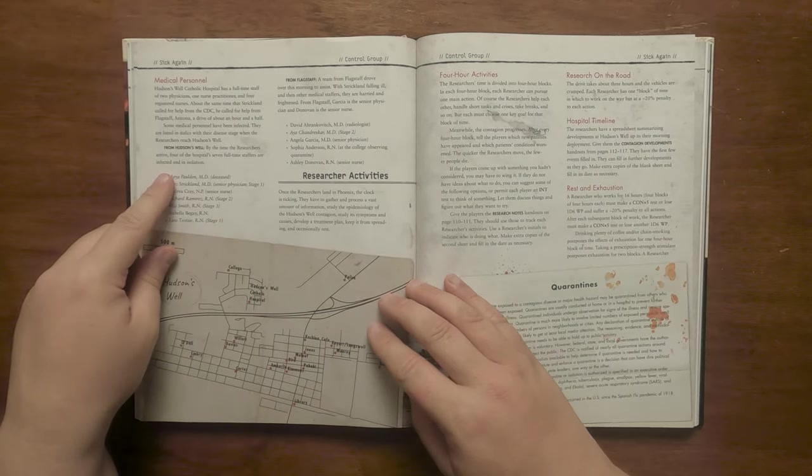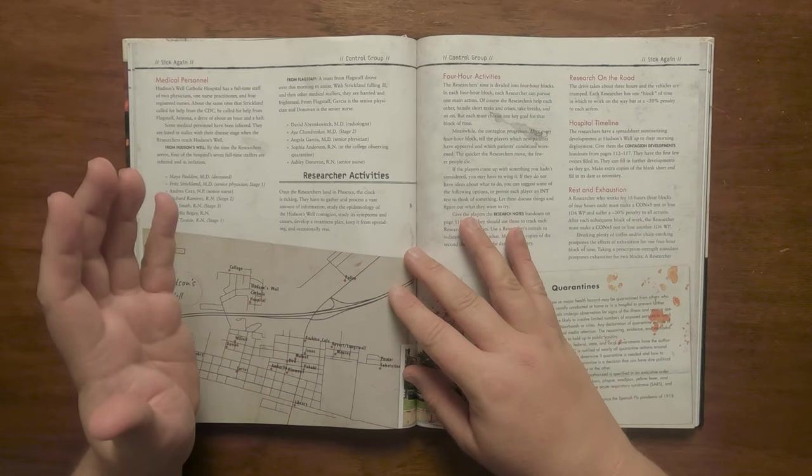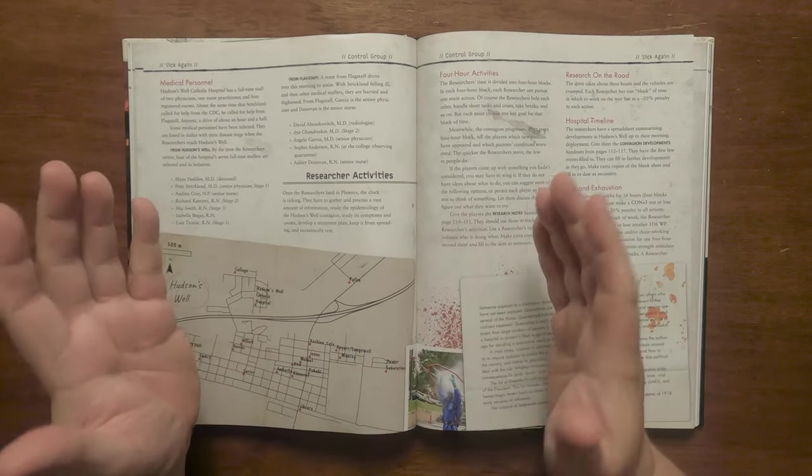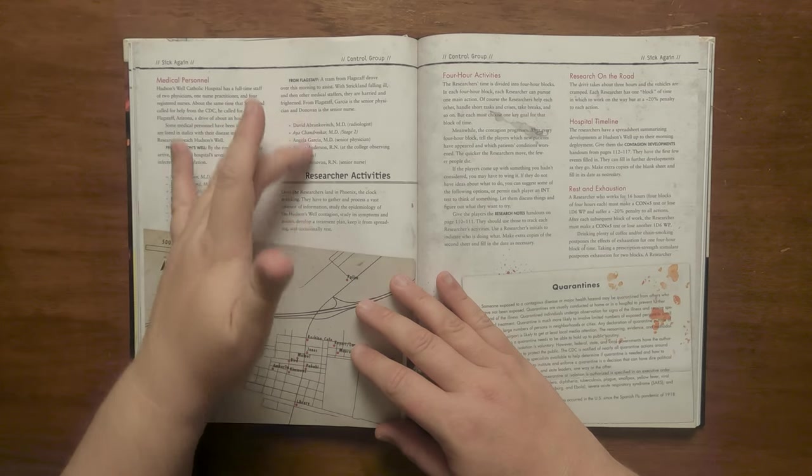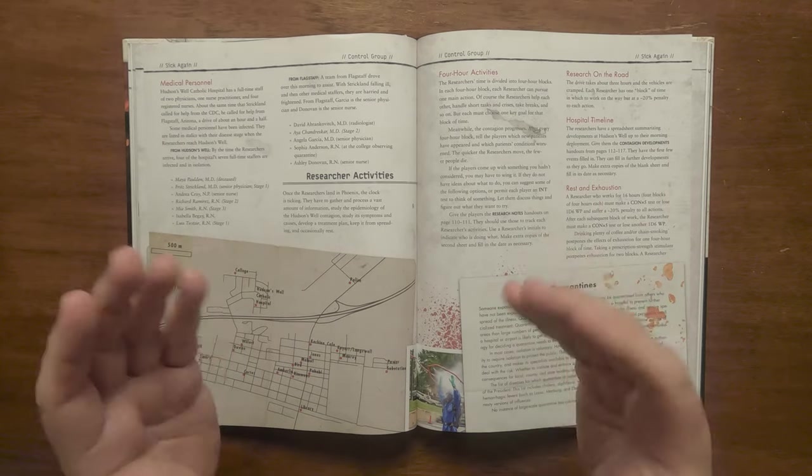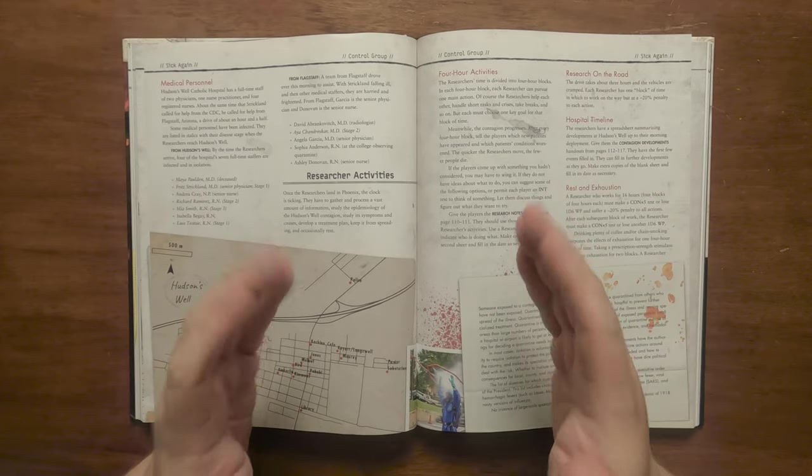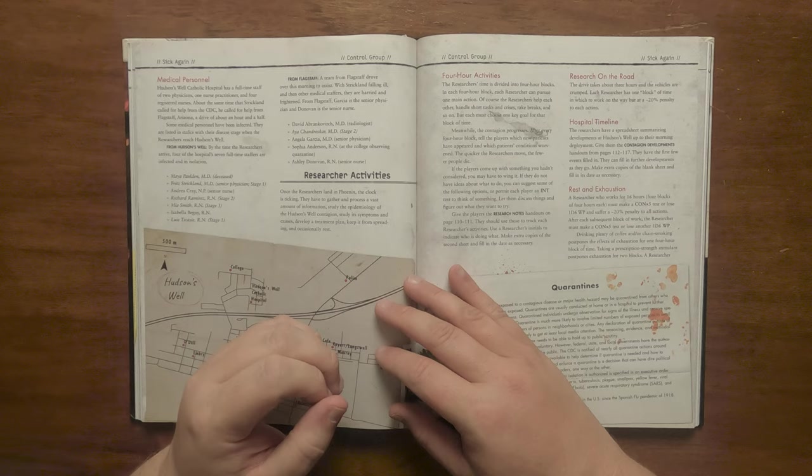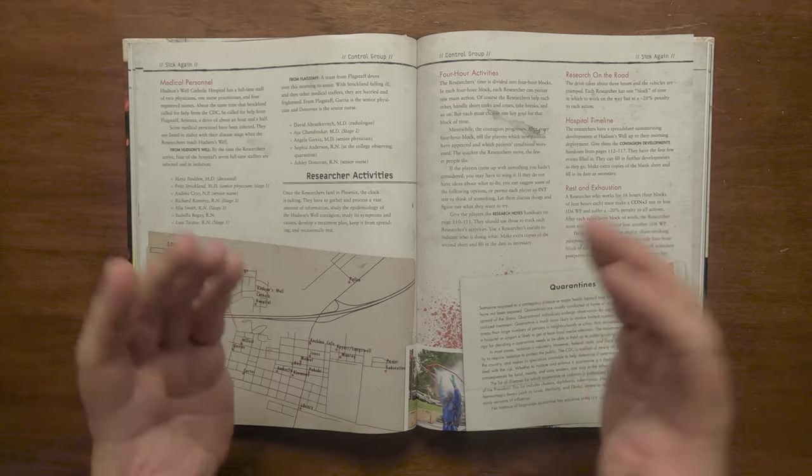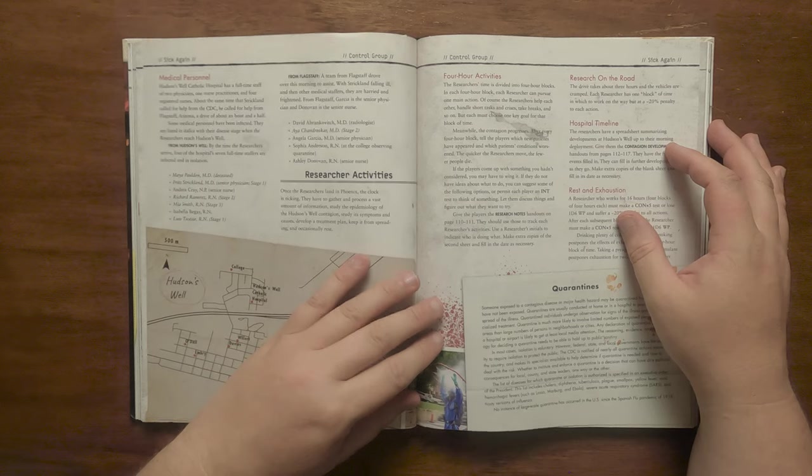There are two doctors, one nurse practitioner and four registered nurses. As soon as Dr Strickland called the CDC he also contacted Flagstaff for help. It lists all of the medical staff that have died or are infected and at which stage from Hudson's Well as well as those that came from Flagstaff. As soon as they arrive in Phoenix the clock is ticking and they will have to pull together information, study the pathogen and its symptoms, work out a plan to treat it and stop it spreading, as well as getting rest and refreshments when they can. The way the scenario is designed is that the researchers have time in four hour blocks in which they can pursue one action. They can help each other with small things and rest, but the goal for that time period is singular.